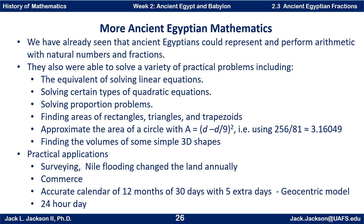In spite of having a geocentric model of the universe — the earth at the center — they were able to work out the mathematics for some astronomical things. They computed an accurate calendar of 12 months of 30 days plus five extra days, giving a 365-day calendar extremely close to correct — pretty much what we use today. They also had a 24-hour day, like we do today.